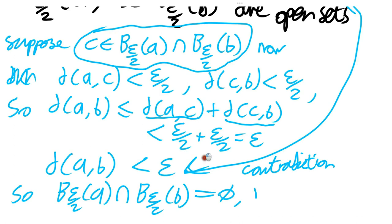So we've found our open sets around a and b which don't intersect, and that shows this space is Hausdorff or T2. So every metrizable space corresponds to a Hausdorff space. This gives us lots of examples of Hausdorff spaces — for example, n-dimensional Euclidean space is a Hausdorff space.